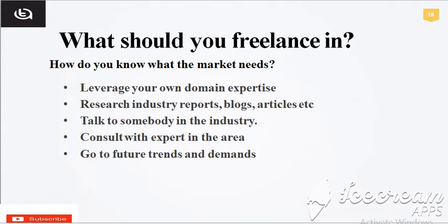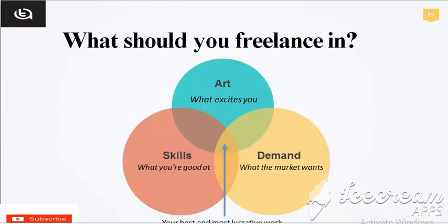Now, what should you do freelancing in? There are three types of circles: number one is skills, number two is demand, and number three is art — meaning what excites you. Compare your interest, goals, skills, and market gap. Look at what type of demanding work is coming nowadays, make an idea, create a skill, and go rock the market.